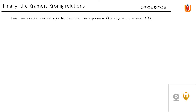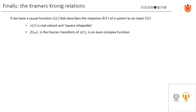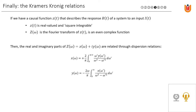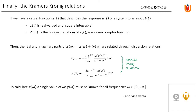To give an interim summary: if we have a causal function z(t) that describes the response r(t) of a system to an input i(t), then z is a real-valued and square integrable function for all physical causal systems. Z(ω) is the Fourier transform of z(t) and is an even complex function. The real and imaginary parts of Z(ω) — that is x(ω) and y(ω) — are related through the dispersion relations. These are called the Kramers-Kronig relations. To calculate x(ω) at a single value of ω, y(ω) must be known over all frequencies from zero to infinity, and vice versa.